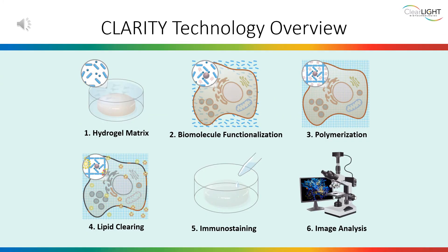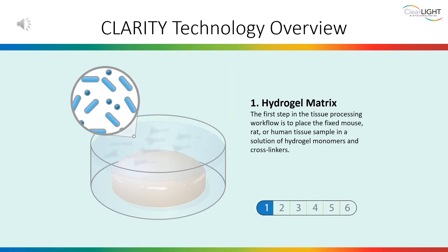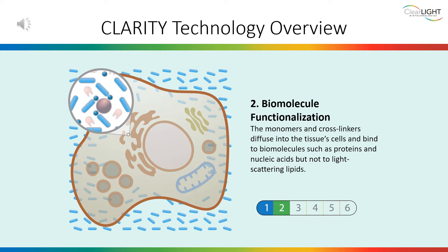Our Clarity Technology process is encapsulated in six basic steps. Step 1: Hydrogel Matrix. The first step in the tissue-clearing workflow is to place the fixed mouse, rat, or human tissue sample into the solution of hydrogel monomers and cross-linkers. Step 2: Biomolecule Functionalization. The monomers and cross-linkers diffuse into the tissue cells and bind to biomolecules such as proteins and nucleic acids, but not to light-scattering lipids.